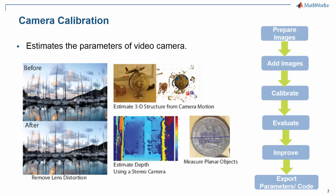The workflow for camera calibration on the right-hand side of the slide is: prepare images, add those images, calibrate them, evaluate for accuracy. If the accuracy is not sufficient, improve it. Once accuracy is sufficient to your needs, export the parameters. Now where do you add those images and how do you calibrate the camera? Let's have a look into all those things.